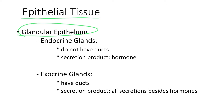Now, what is a gland? Any gland is a structure that produces and secretes a chemical product. And there are two main types of glands in our body: we have endocrine glands and we have exocrine glands. And there are many differences between these two types of glands.